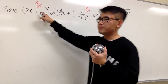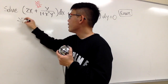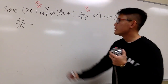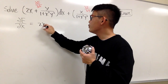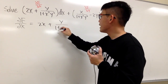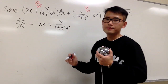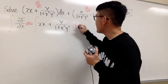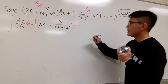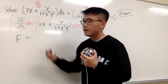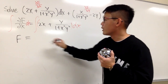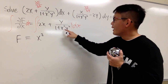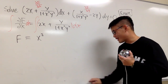We can begin with either expression. This time let me begin with the partial of F with respect to x, which equals (2x + y) / (1 + x²y²). We integrate both sides with respect to x. On the left-hand side we get capital F. On the right-hand side, the integral of 2x gives x². The integral of y / (1 + x²y²) is a bit harder, so let me work that out on the side.